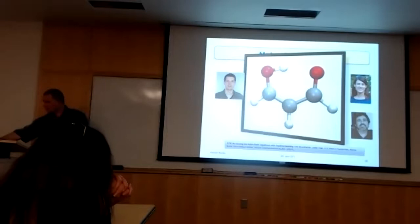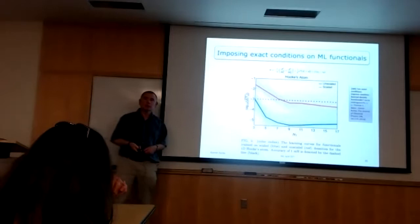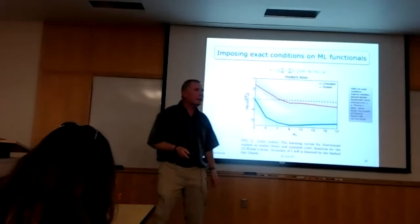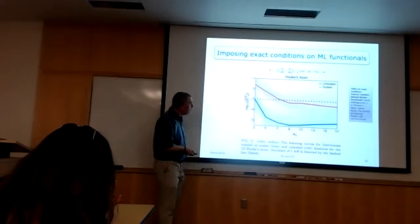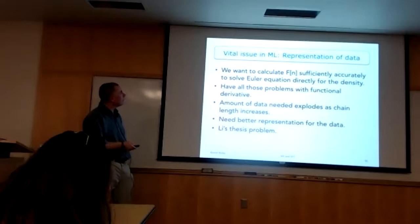This was a paper I wrote with Jacob Hollingsworth, who came and checked out our group when he first came to UCI, then decided to work with Daniel instead. He did a very nice piece of work testing exact conditions used in density functional theory on the machine-learned functionals. In some cases they really helped make things more accurate; in other cases, not so much.